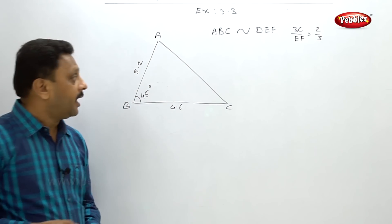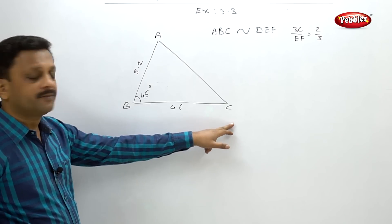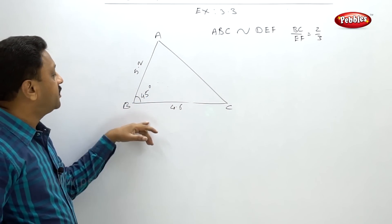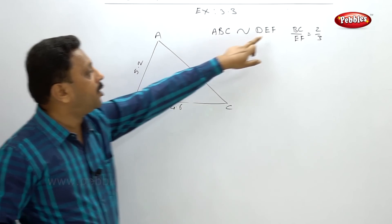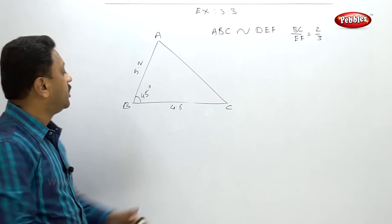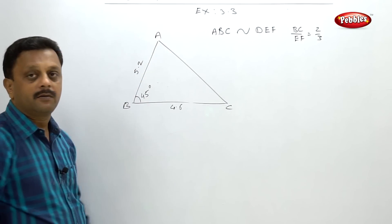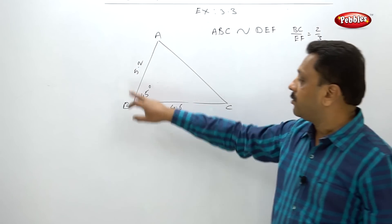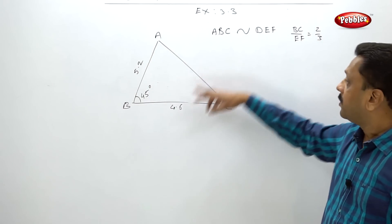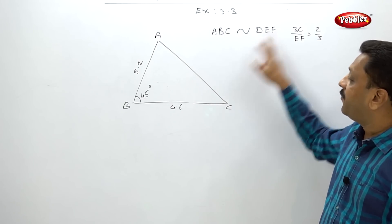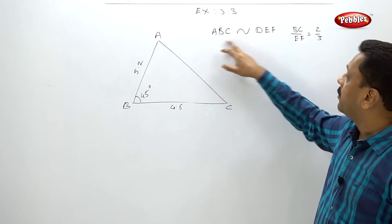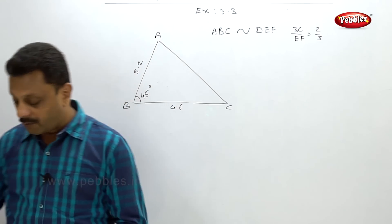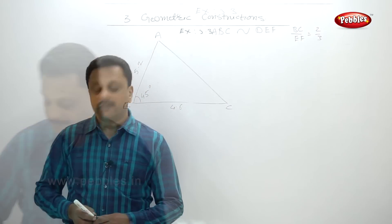BC is given as 4.6, so you will get the base. BA upon ED is 2 by 3, so you will get ED also, and the angle is the same — 45 degrees. Calculate EF first, then calculate DE. The angle is the same, and you can construct this triangle. Please pause your video here, then we'll go ahead.